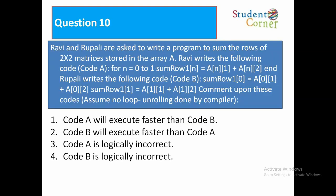Question number 10: Ravi and Rupali are asked to write a program to sum the rows of 2 by 2 matrices stored in the array. Ravi writes the following code, code A: for n is equal to 0 to 1, sumRow1 of n is equal to a of n1 plus a of n2. And Rupali writes the following code, code B: sumRow1 of n is equal to a of n1 plus a of n2. Comment upon these codes.